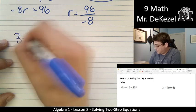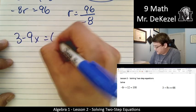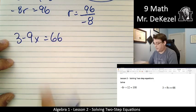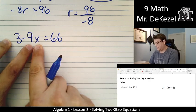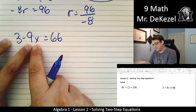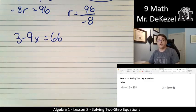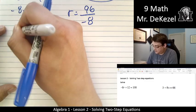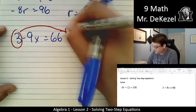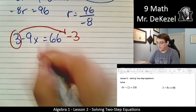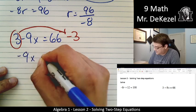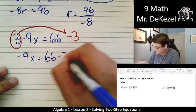We have 3 minus 9x equals 66. We want to get the minus 9x alone first, that part of the term, because that's where the x is. So we're going to move the 3 over. It's positive on this side. So when we move it over, it's going to be negative. So we have then minus 9x equals 66 minus 3.